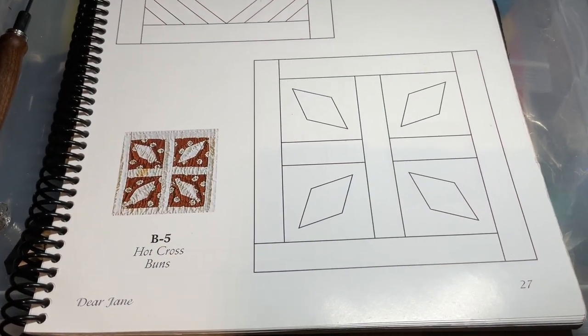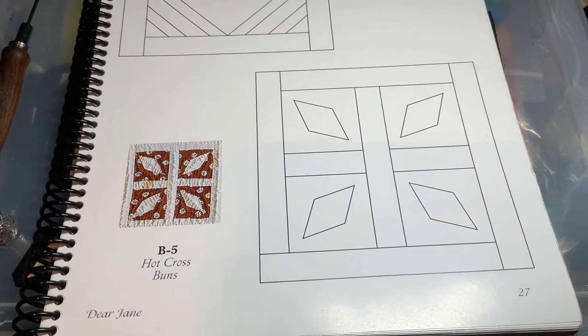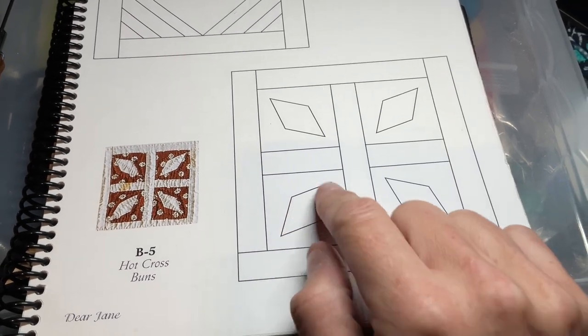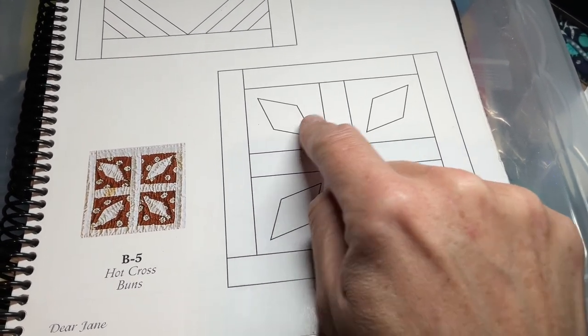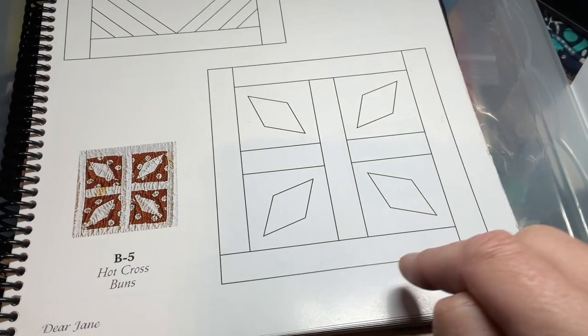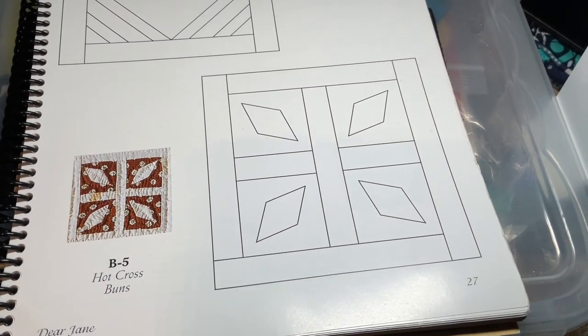This is the assembly video for the B5 block. B5 has applique diamonds on the squares and then we've got like a log cabin type assembly here.